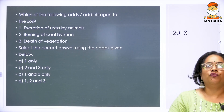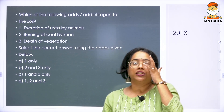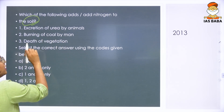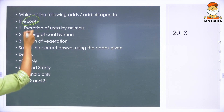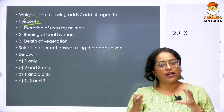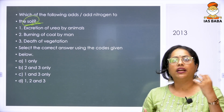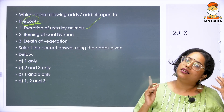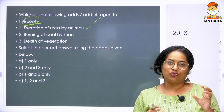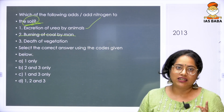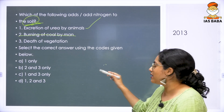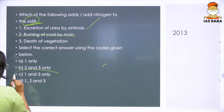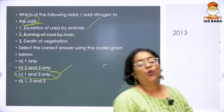The next is a 2013 question: which of the following adds nitrogen to the soil? The options are excretion of urea by animals, burning of coal by man, and death of vegetation. Excretion of urea is relevant — ammonia and related compounds pass into the soil, so that is nitrogen. Burning of coal releases nitrogen oxides, but to the atmosphere, not the soil, so option 2 is not valid. Death of vegetation — when something containing nitrogen dies, that nitrogen gets broken down and enters the soil. So the answer is 1 and 3 only.